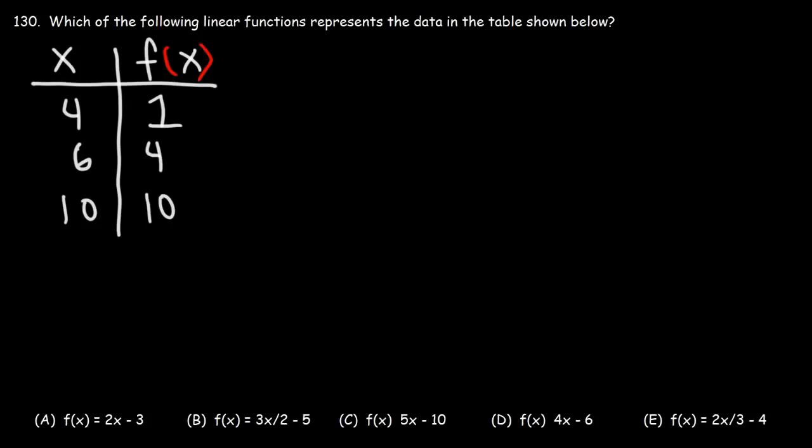Number 130. Which of the following linear functions represents the data in the table shown below? Now, what we need to understand is that y relates to f of x—they're the same. What we need is only two points, and with two points we can write an equation or even a function. The first point is 4, 1. x is 4, y is 1. The second point we're going to use is 6, 4.